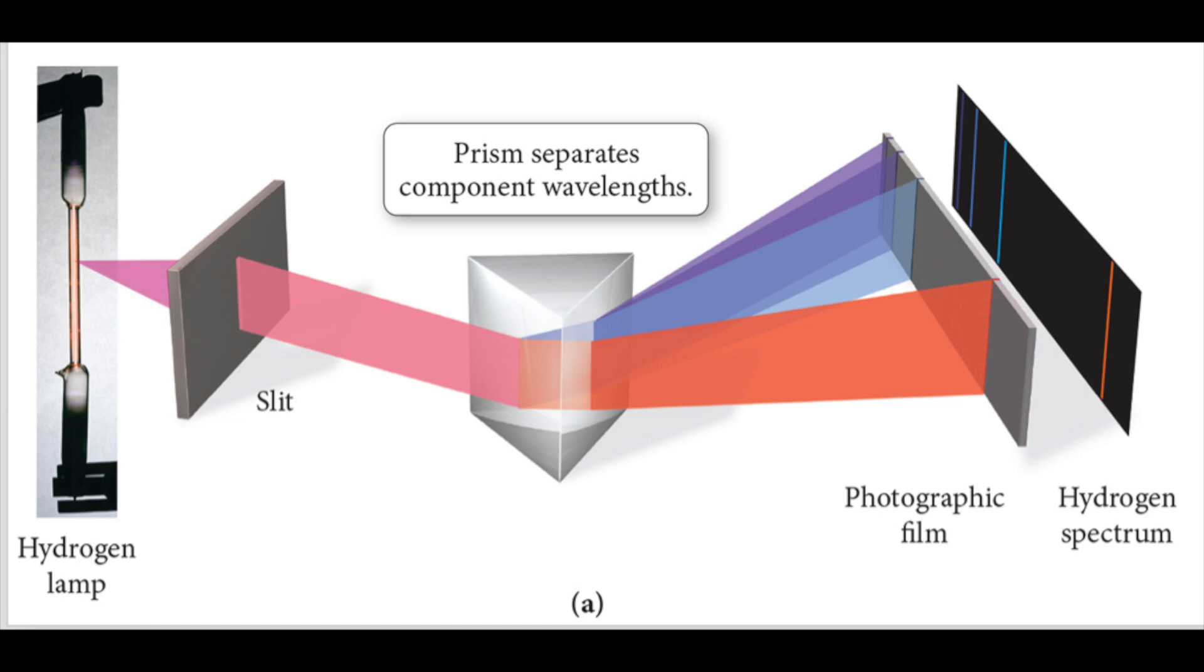The light that is emitted can be separated into constituent wavelengths by passing it through a prism. Once the wavelengths have been separated, the result looks like a series of colored lines called an emission spectrum, or a line spectrum.